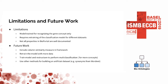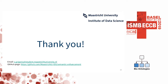For future work, we would like to include a column similarity measure in the framework so that we wouldn't have to search for each column name every time. We would like to retrain the model with more data to increase its accuracy, and also maybe restructure it to perform multi-classification — including more concepts like proteins. We may also go back to our artificial datasets and use other methods for building them, such as synonyms from WordNet. And that's it.